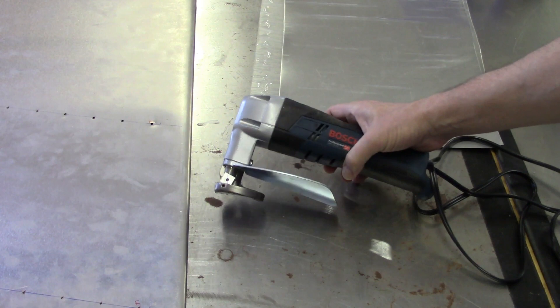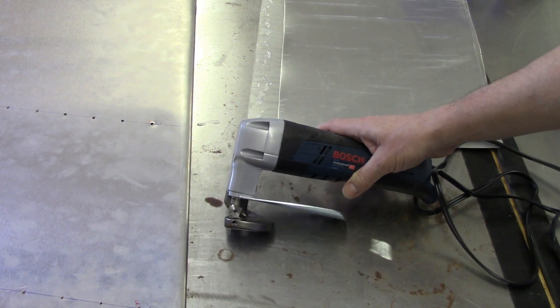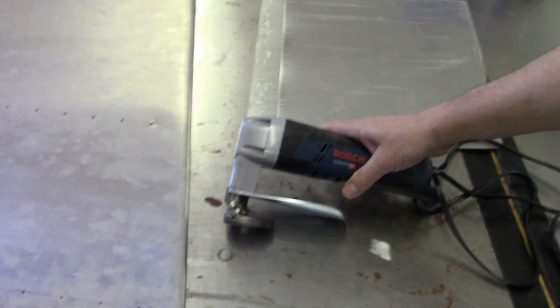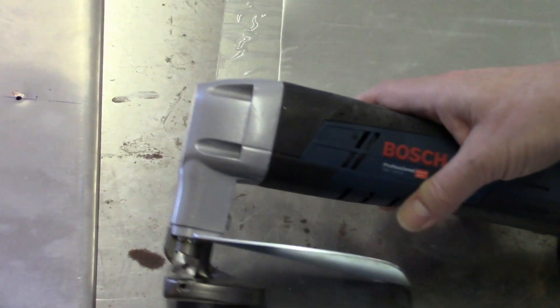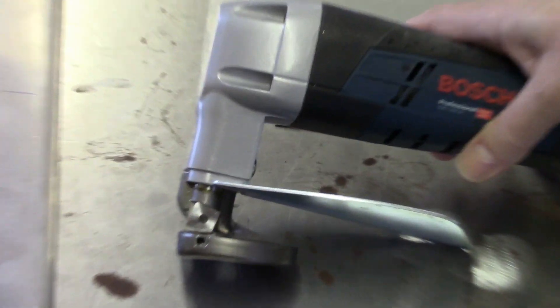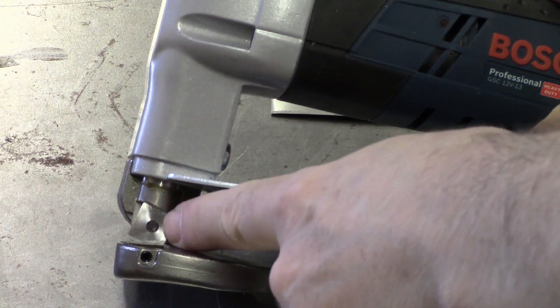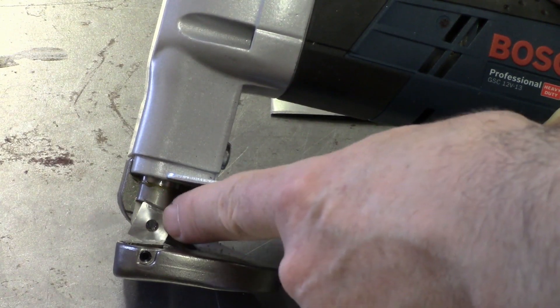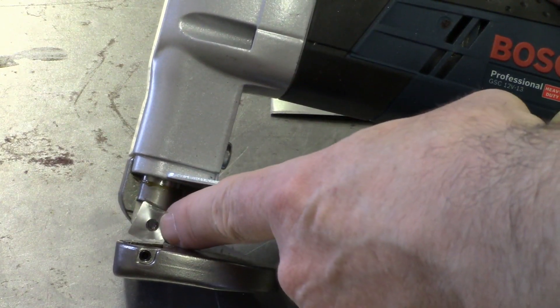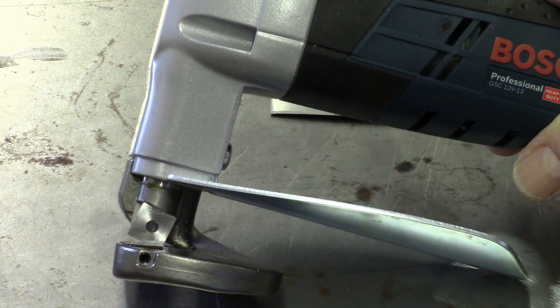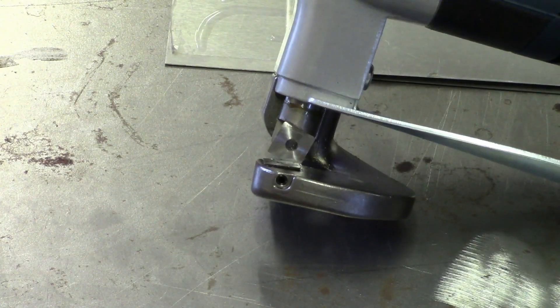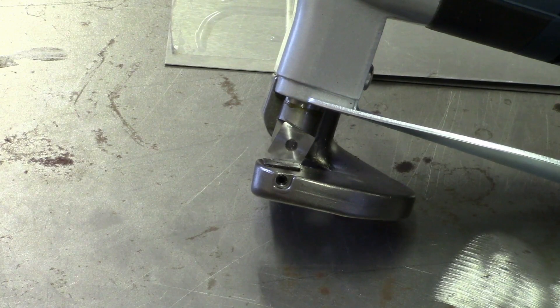Just a few features that I see that I like compared to maybe some of the other less expensive shears. One thing you'll notice is that this has a four-sided blade on it, and you've got a screw and you can actually turn this around to a fresh edge so that if you dull one edge, you've got more edges that you can use.